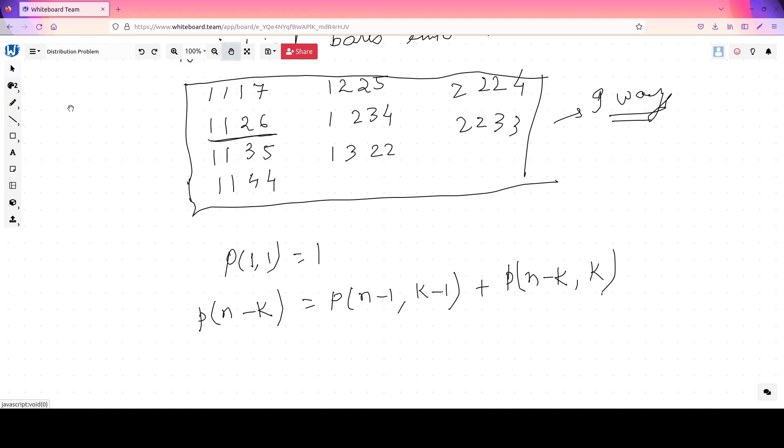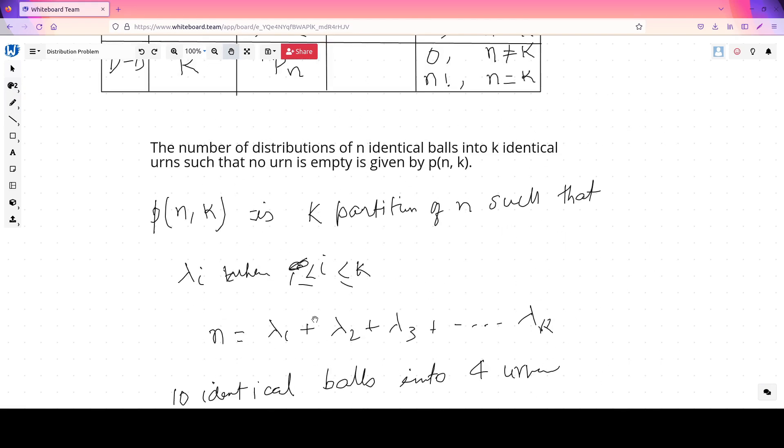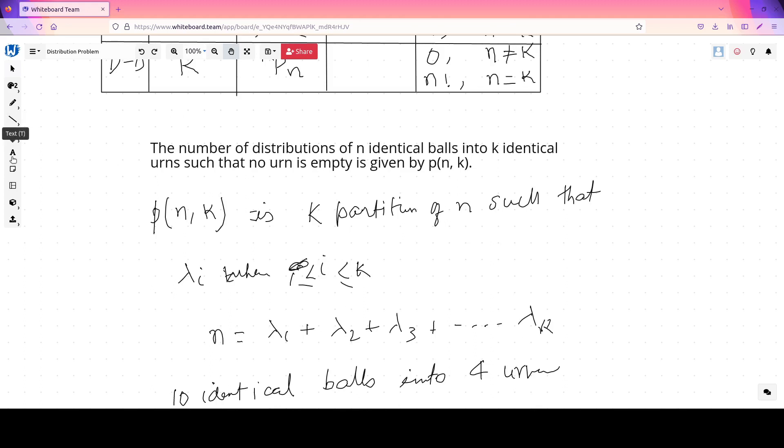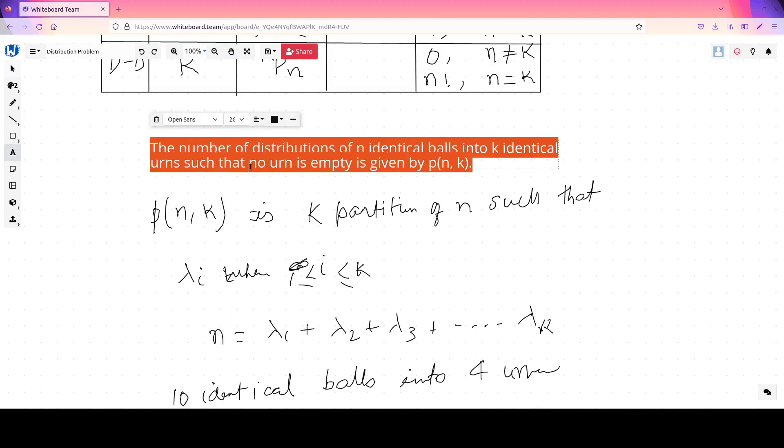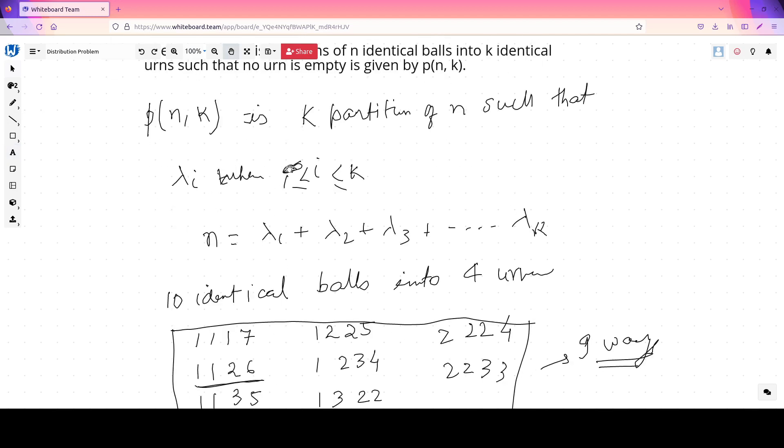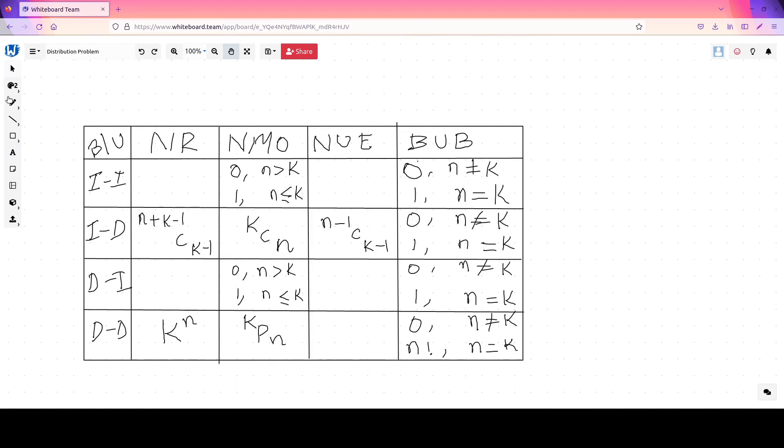So this identity will help you to find any p(n,k) as needed. Normally this kind of question is not asked, but since we need to complete the table, I am going to finish this part. When there is no restriction, it will be nothing but from i equals 1 to k. So you have to add or sum all of this. So this p(n) is sum from 1 to k.